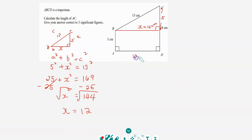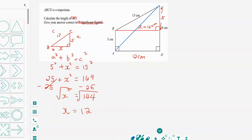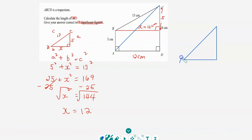Since that side is 12, we can label it 12 centimeters. Now we're looking for the length of AC and need to give our answer to three significant figures. Drawing the triangle for AC: angle A, angle C, and angle D — which is the right angle. So we have 12 centimeters and 8 centimeters, and we're looking for side AC. Following the Pythagorean theorem: a² + b² = c².